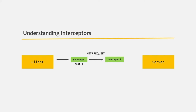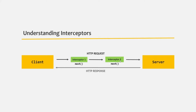In interceptor two, we can also manipulate the modified request that interceptor one sent. We can manipulate it further using interceptor two, and after manipulating it, we again need to call the next method — then only the request will be forwarded to the server. The server receives the modified request and sends us the response. Remember, we can also manipulate the response once it is received at the client using interceptors before using it in our application. So this is the basic idea of how an interceptor works.